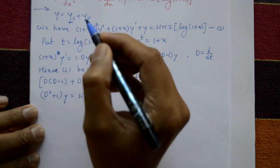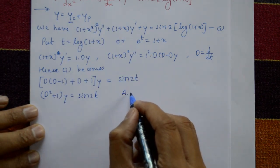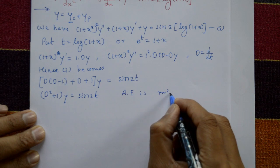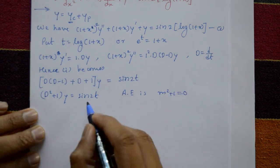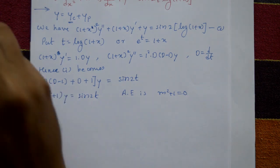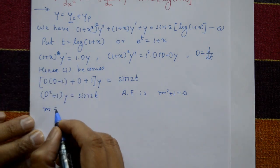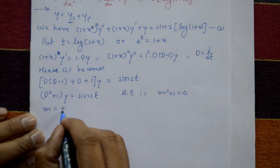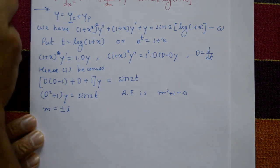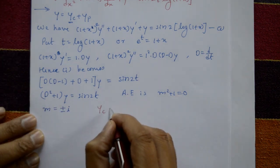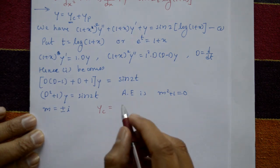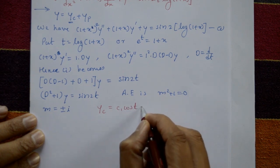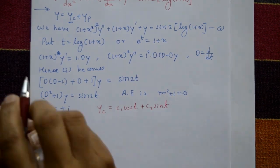Now go to the complementary function. The auxiliary equation is m² + 1 = 0, since the right-hand side is zero. So m² = −1, giving m = ±i. These are complex roots. For complex roots, alpha = 0 and beta = 1, so the complementary function is yc = c₁ cos t + c₂ sin t.